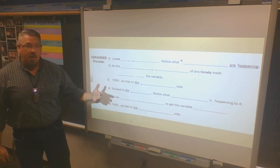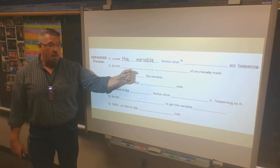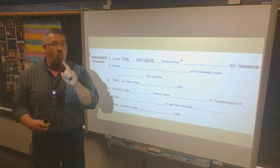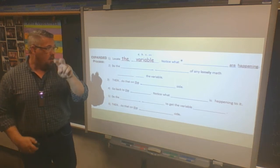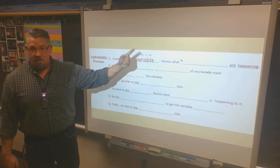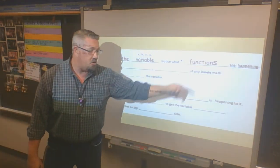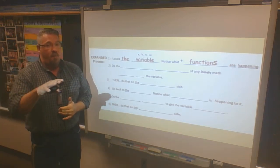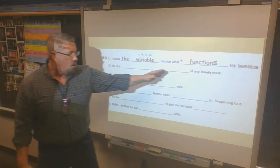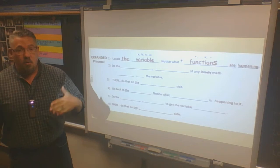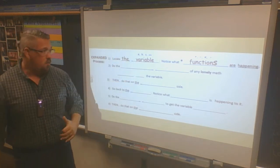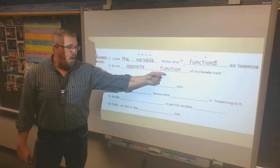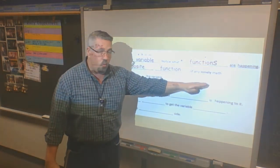I begin by locating the variable, and once I locate it I notice — with an asterisk here — it's not just one function anymore, I have two functions happening. If you need to write down the variable letter, feel free. But 'functions' should be plural on your paper, because I have more than one, and it's important to identify the difference between the two. Notice what functions are happening — adding, subtracting, multiplying — and make a note.